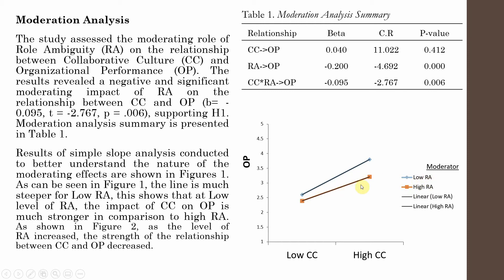The red line is much straighter. The line is much steeper for low RA — low role ambiguity. This shows that at low role ambiguity, the impact of CC on OP is much stronger in comparison to high role ambiguity.